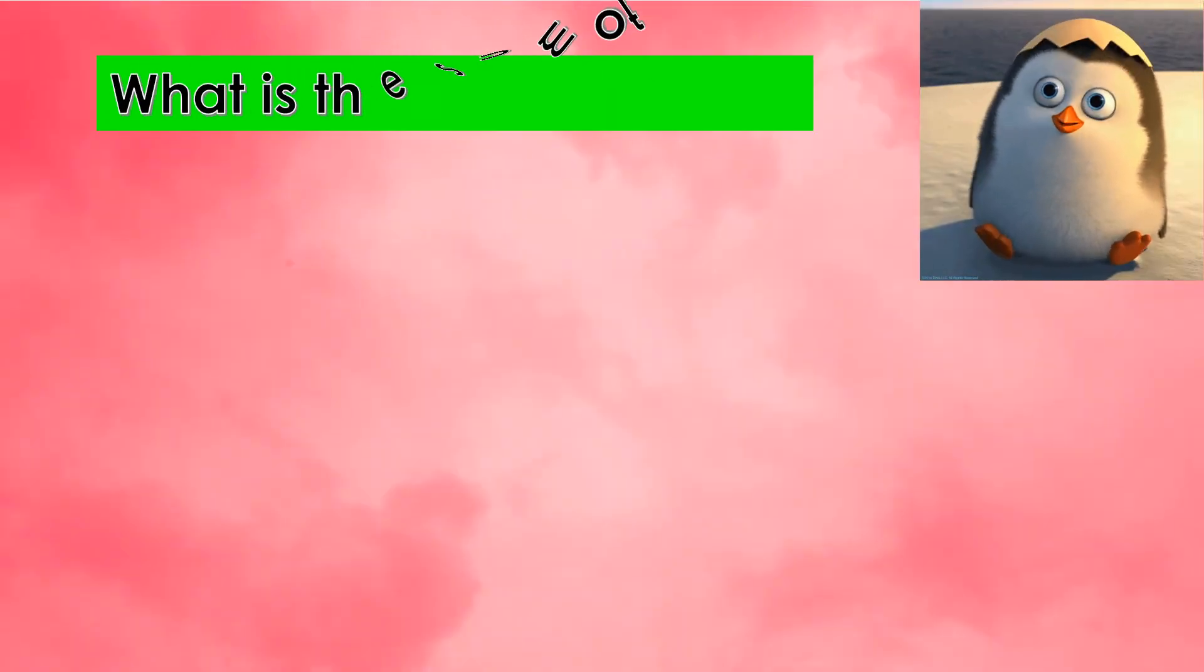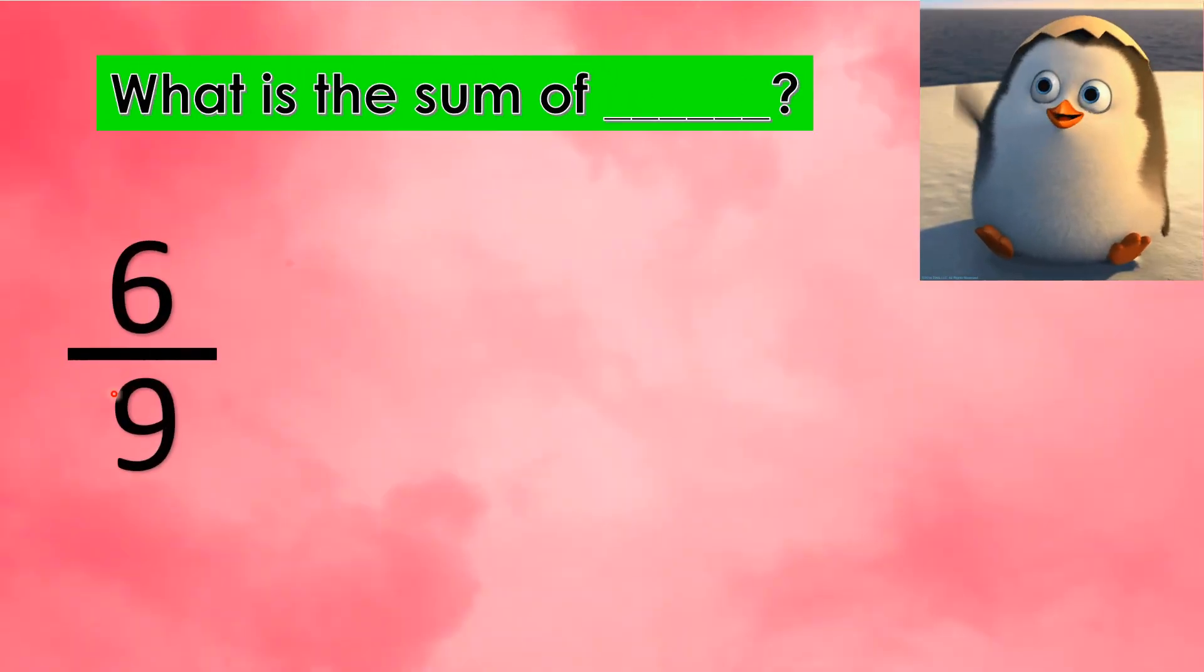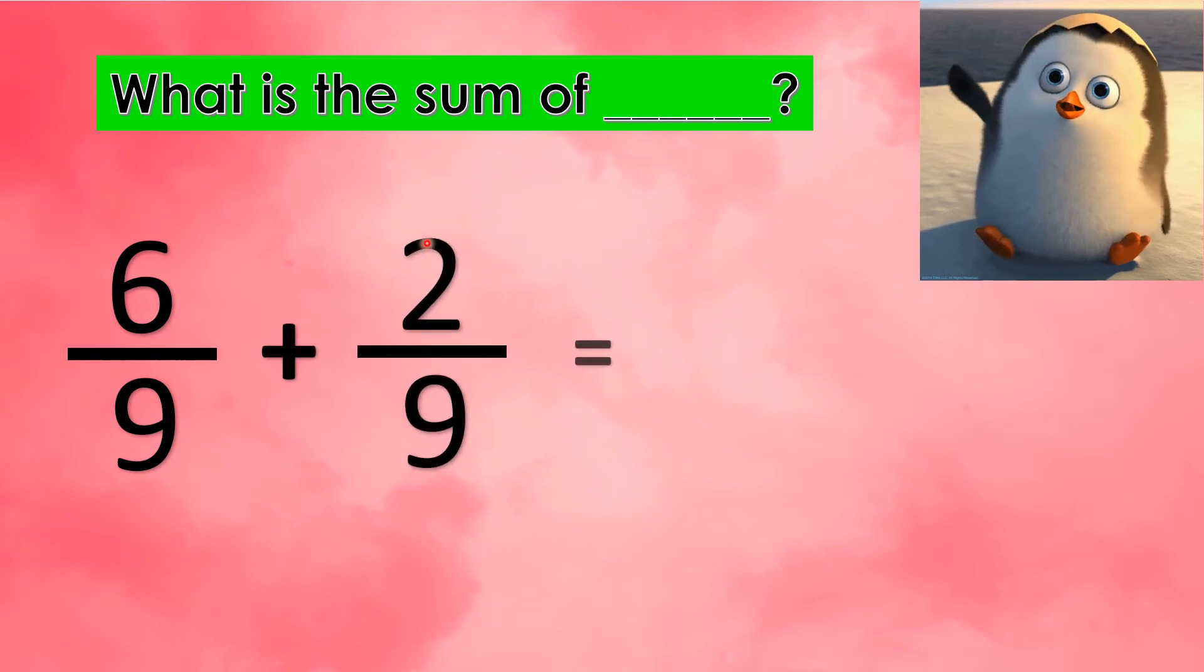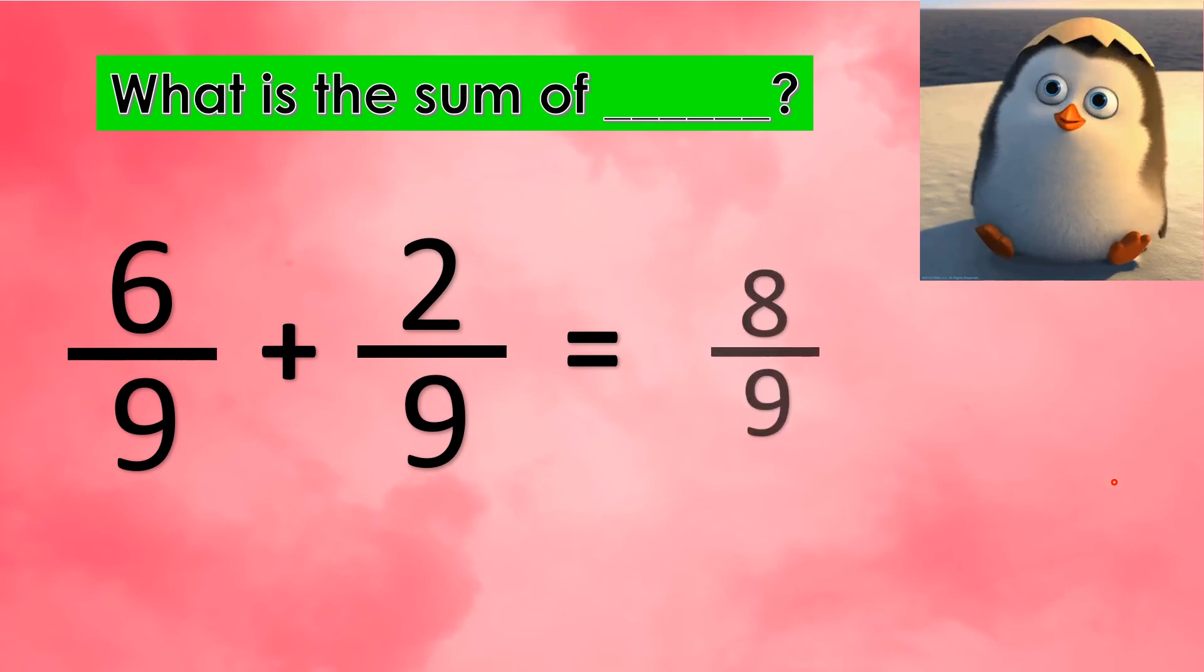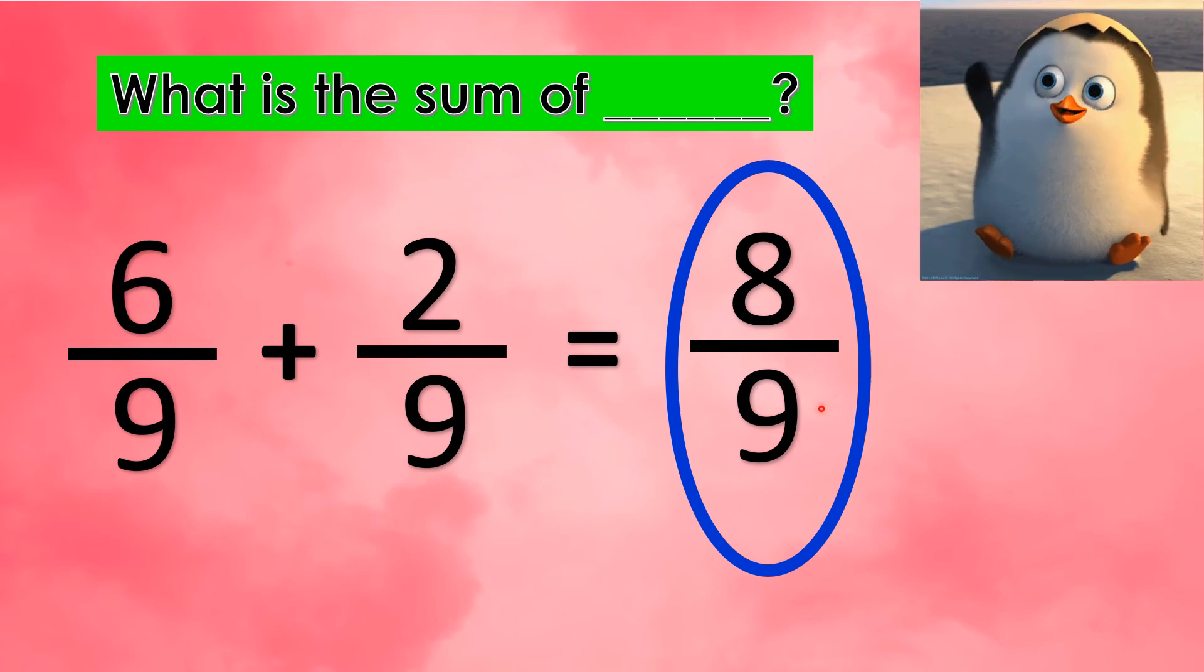What is the sum of 6 ninths plus 2 ninths? Can you solve for it? 1, 2, 3. You are correct!